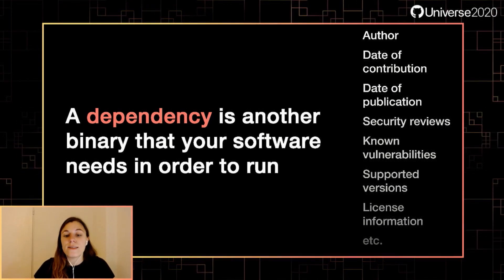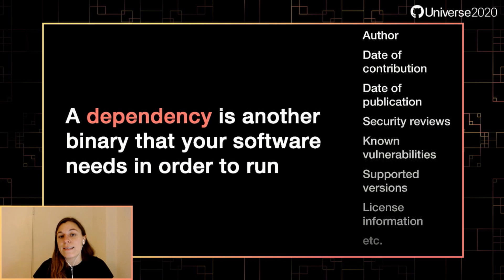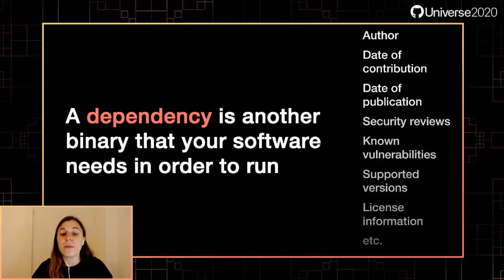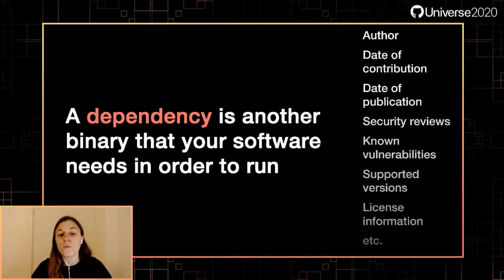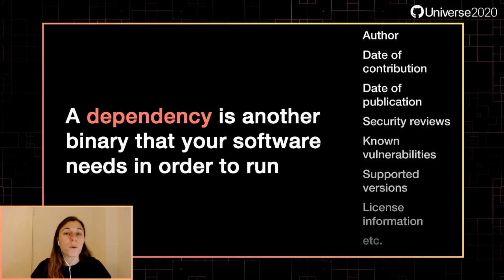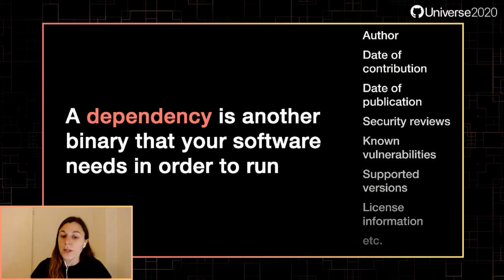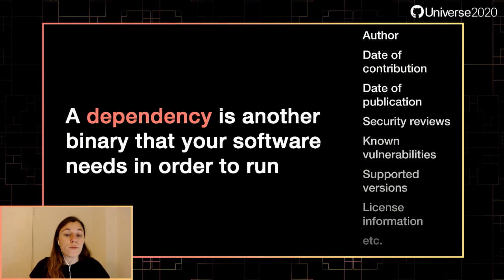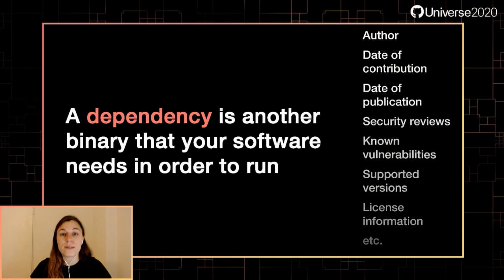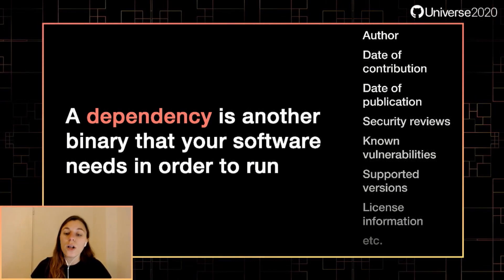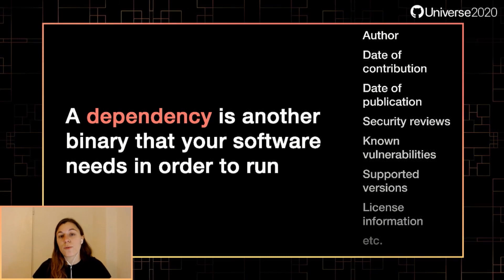To make the dependencies that you pull in less scary, we want transparency as to what's in them, so that you can be confident in what you're consuming. This means that you might want to know, for a given dependency, who wrote it, when it was contributed, how it's been reviewed for security issues, any known vulnerabilities, supported versions, license information — everything. All of these things help you determine your risk profile.